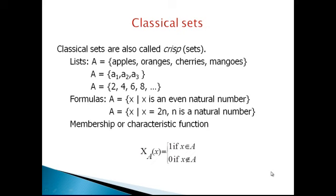Classical sets are represented in three forms. The first form is a list. For example, A is equal to {apples, orange, cherries, mangoes}, or A is equal to {A1, A2, A3}, or A is equal to {2, 4, 6, 8}.